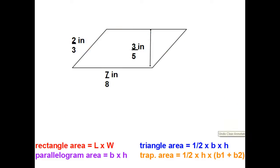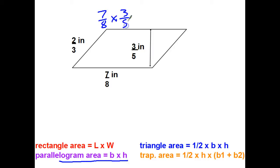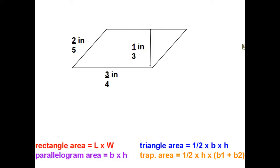Now for the area: area of a parallelogram is base times height, so seven-eighths times three-fifths. Top times top is 21, bottom times bottom is 40. They're not both even — I could divide the top by 3 but not the bottom by 3 — so that's fully simplified: twenty-one fortieths square inches.